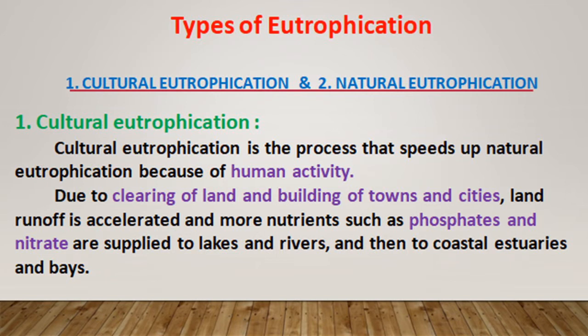In cultural eutrophication, due to clearing of land and building of towns and cities, land runoff is accelerated and more nutrients such as phosphate and nitrate are supplied to lakes and rivers. The flowing water, while running, carries away nutrients such as phosphate and nitrate and adds them to the lakes, rivers, and finally to the coastal estuaries and bays.